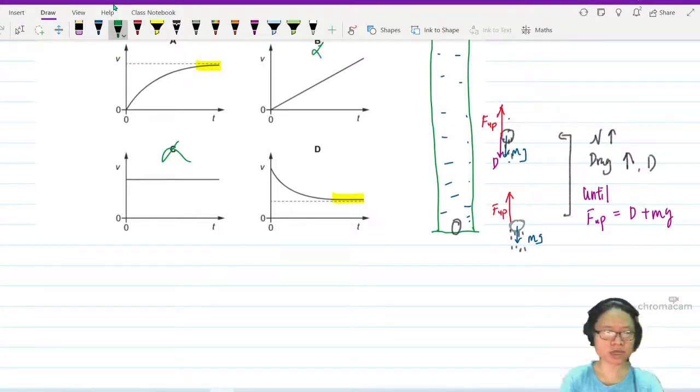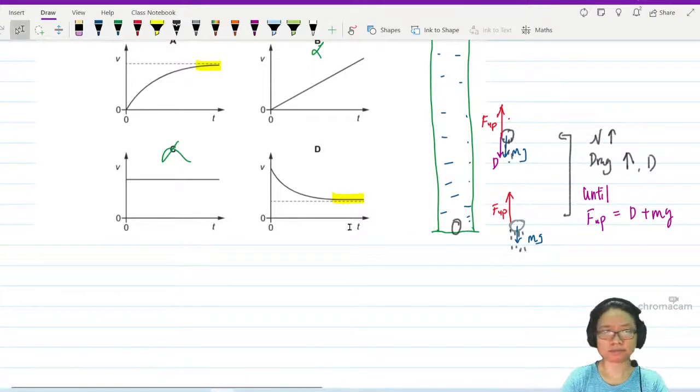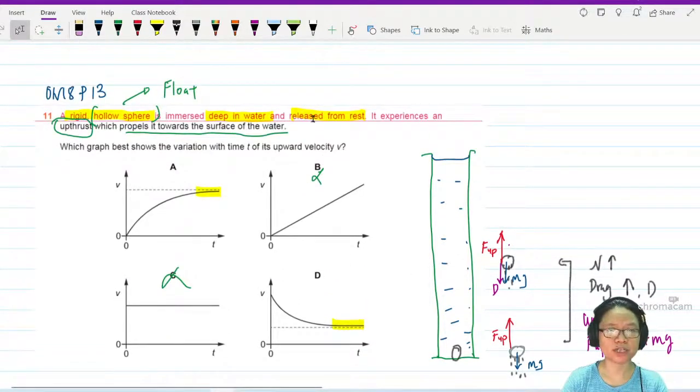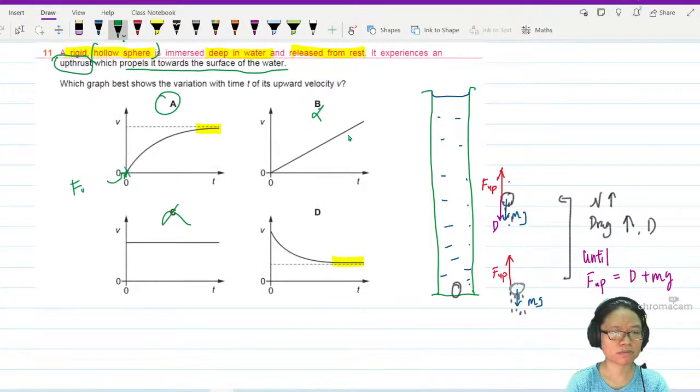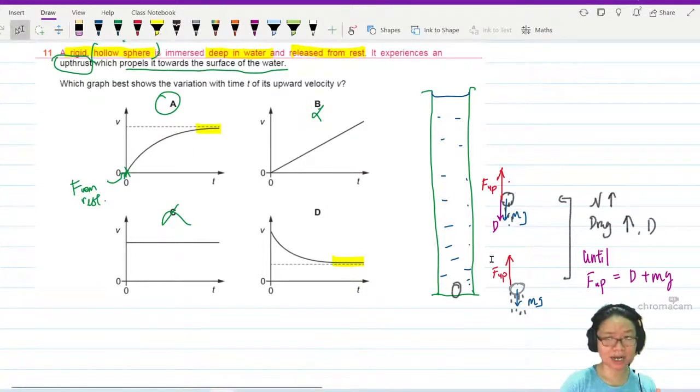But then the question will be, how do I know whether the speed is increasing or decreasing? This object is at rest at the bottom. Yeah, released from rest mark. So it's A, because this is released from rest. Also, the speed is going to speed up and then maintain. It will not slow down.